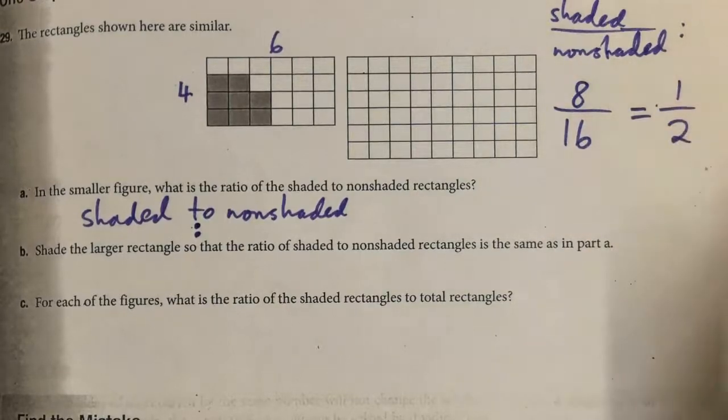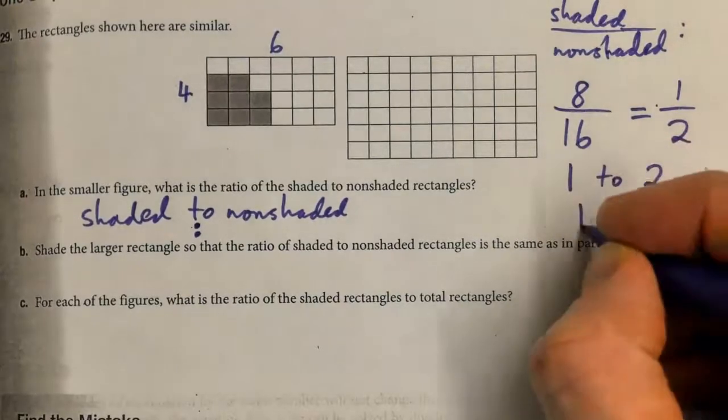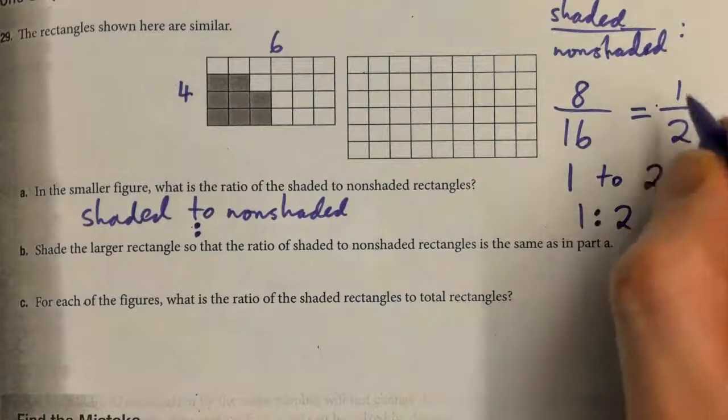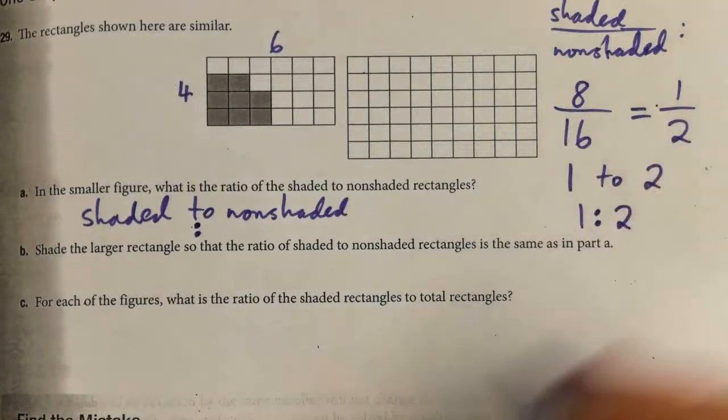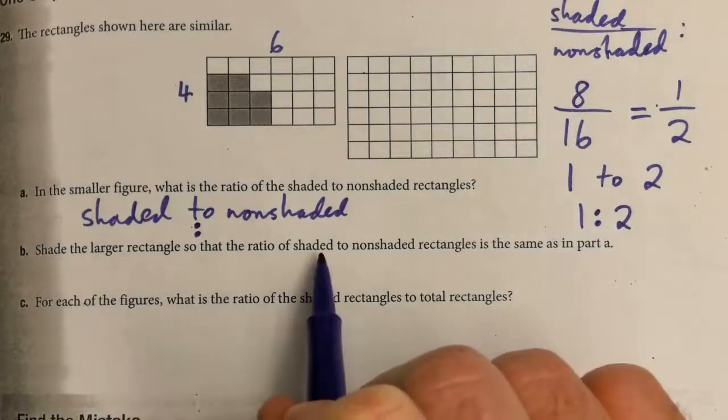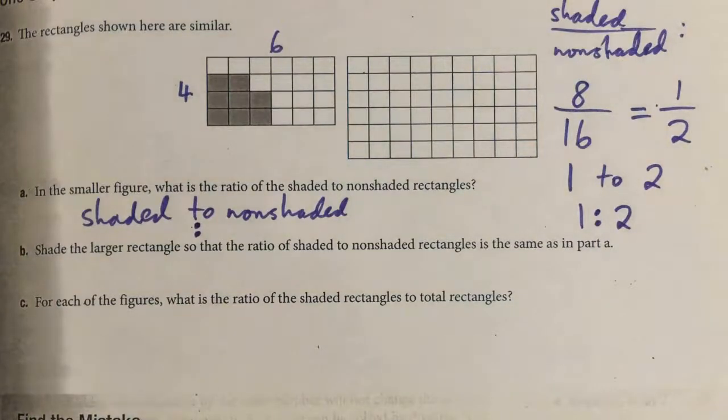There are three ways to write a ratio: one-half, 1 to 2, or 1:2 with colons. Now let's do part b: shade the larger rectangle so that the ratio of shaded to non-shaded rectangles is the same as in part a.